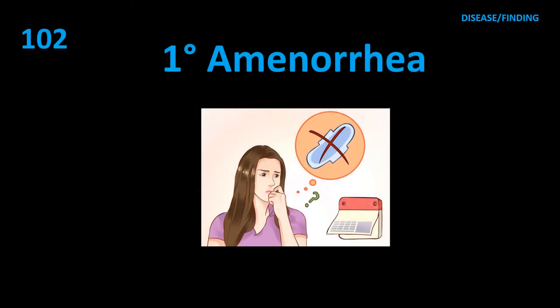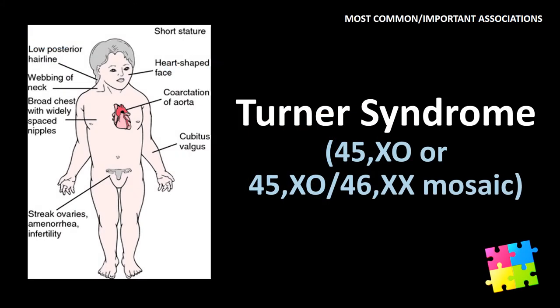Item 102: Primary amenorrhea — Turner syndrome: 45,XO or 45,XO/46,XX mosaic.